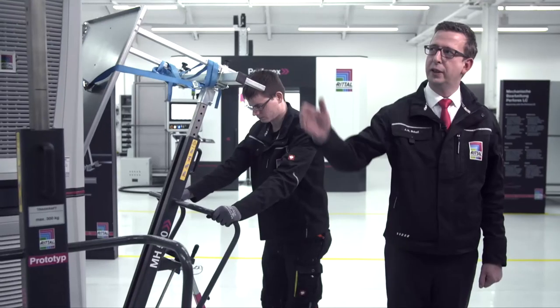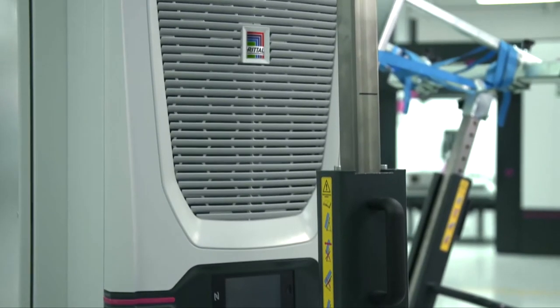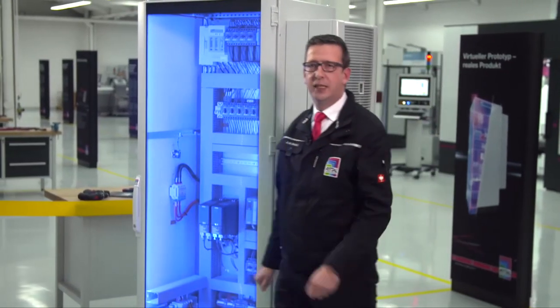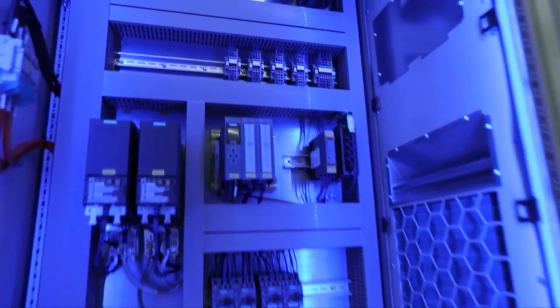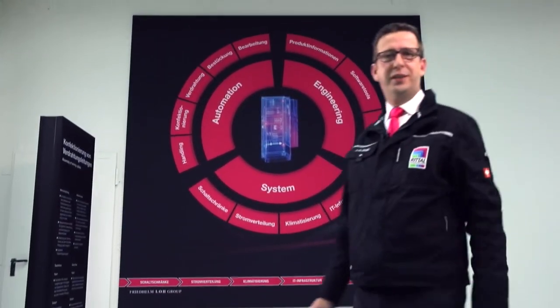The completely wired mounting plate is installed back inside the enclosure using the same handling tool, allowing very ergonomic work — even for heavy components like a climatization unit. The remaining components are installed and wired, also supported by EPLAN Smart Wiring. Finally, after a successful quality check, we have the one-to-one image of the virtual prototype as the real product. Engineering, system, and automation solutions connected through the virtual prototype are the key to an efficient digital workflow.